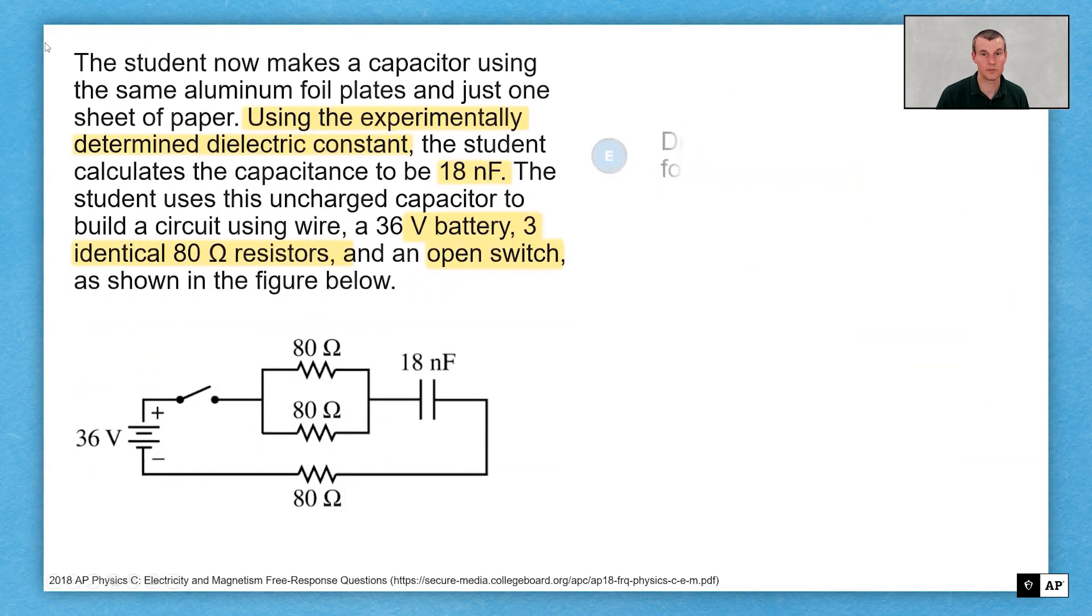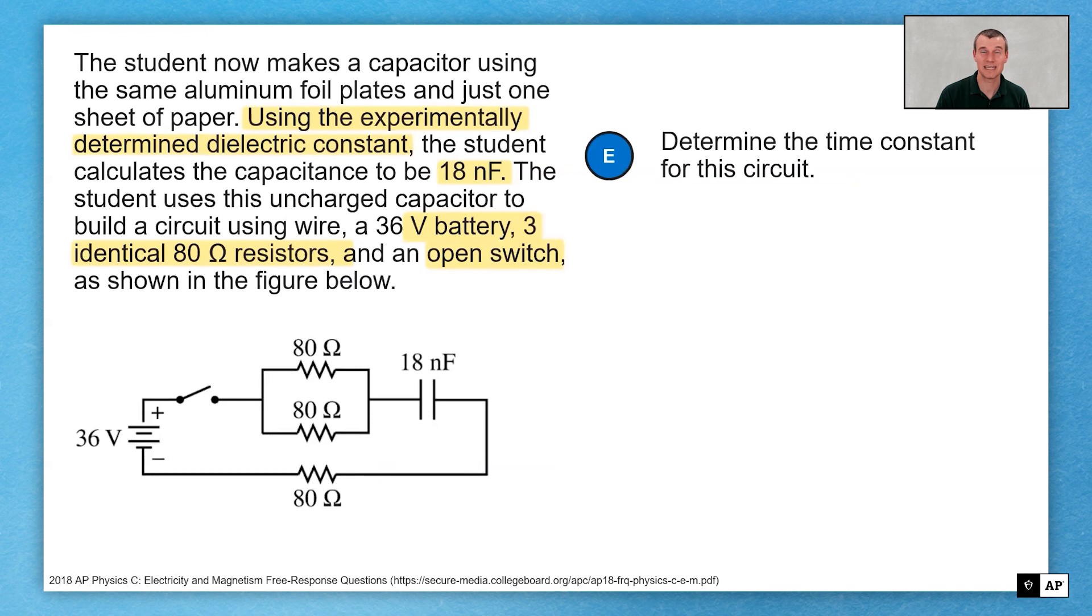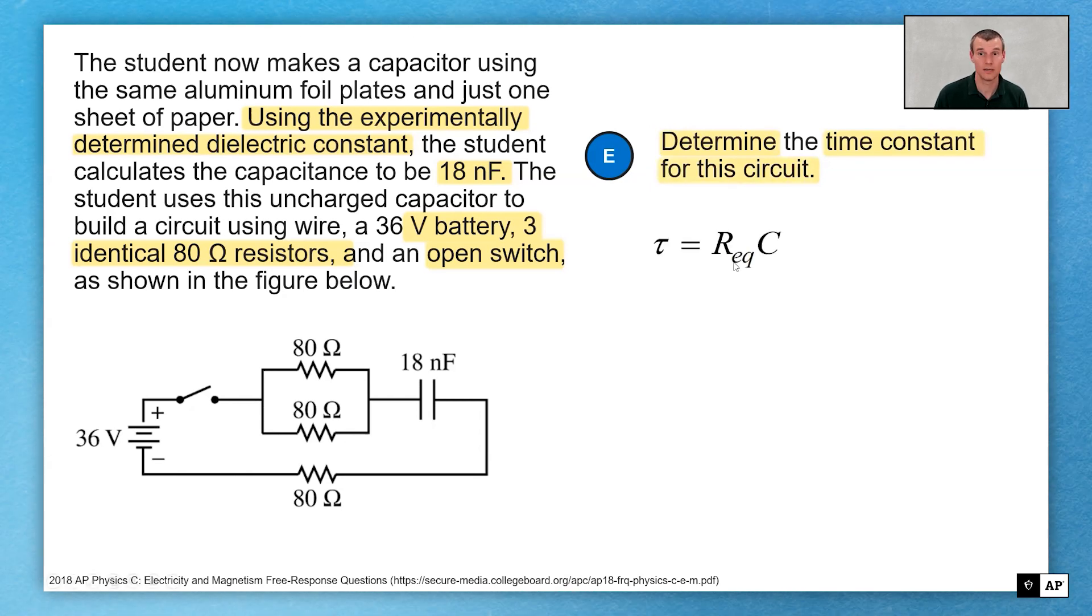So now we're continuing with that same thing for part E. I want to determine the time constant. This equation isn't on your equation sheet, so it's worth memorizing it if you don't know it already for a capacitor. Tau is equal to RC.